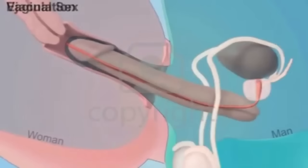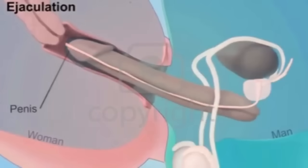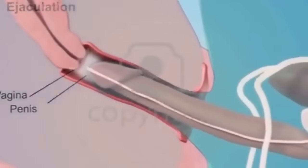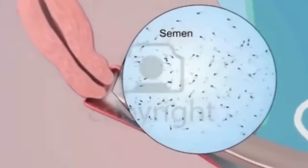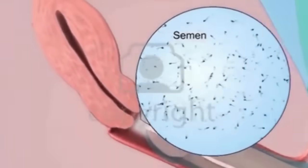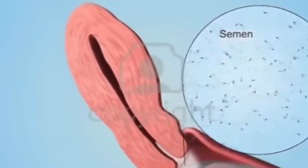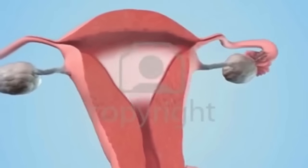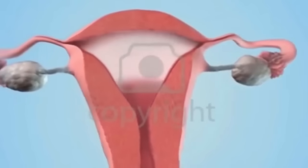Vagina. The vagina is the place where semen from the male is deposited into the female's body at the climax of sexual intercourse, commonly known as ejaculation. Around the vagina, pubic hair protects the vagina from infection.